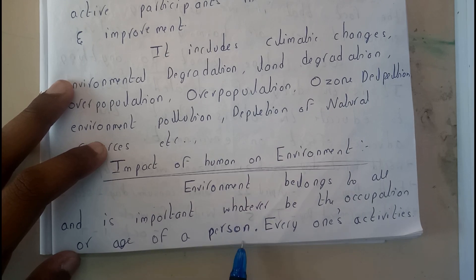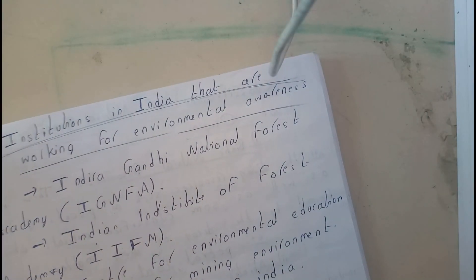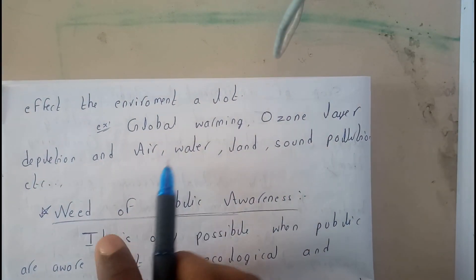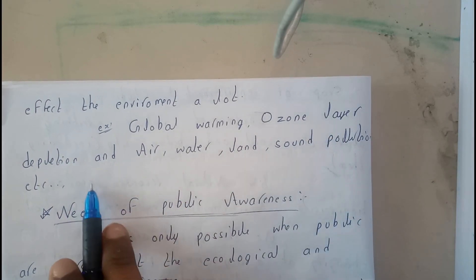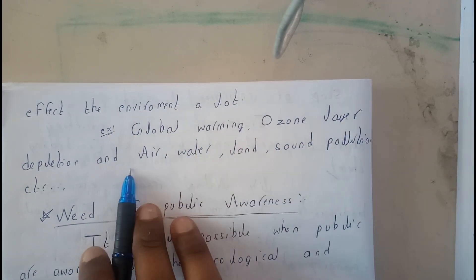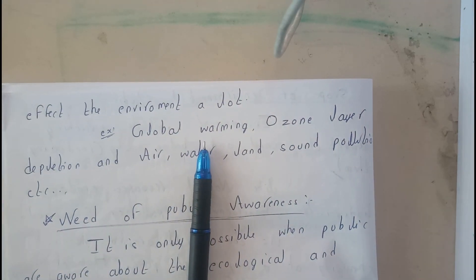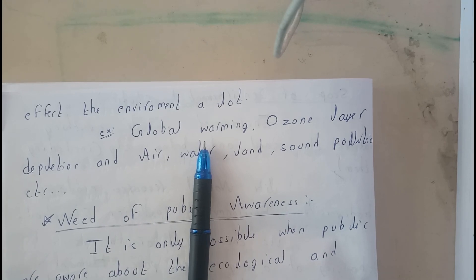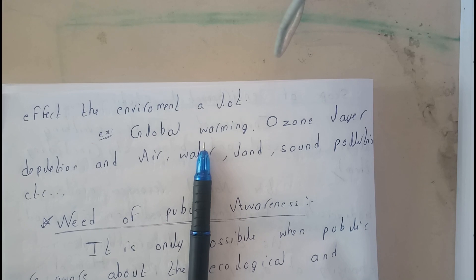For example, global warming, ozone depletion, water and land pollution - these are all human activities which are degrading our environment. I hope everyone got a small idea on it. In the next tutorial, we'll be discussing public awareness and what is the need for public awareness. Thank you for watching.